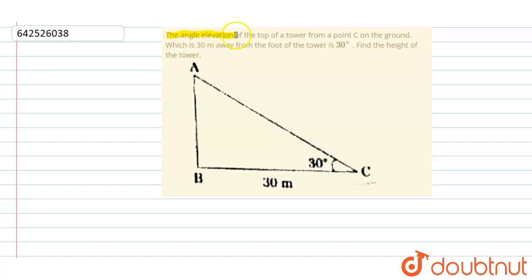The angle of elevation of the top of the tower from point C on the ground, which is 30 meters away from the foot of the tower is 30 degrees. Then find the height of the tower.